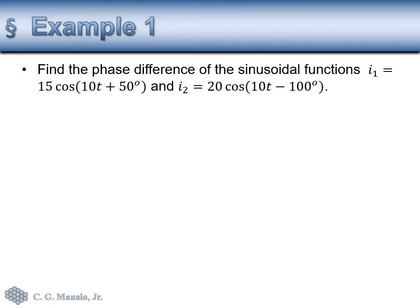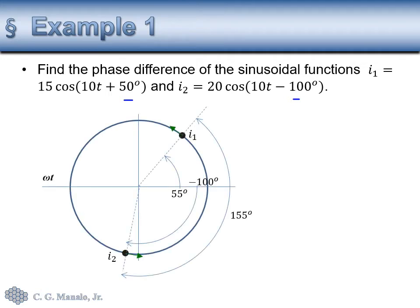Let's take an example. We have two sinusoids, I sub 1 and I sub 2, each expressed as the same cosine function, so we don't need to convert them to sine. They have different phase angles, so they are not in-phase sinusoids. The question is which is leading and which is lagging and by how much. Drawing them on a circle, it is clearly shown that I sub 2 is lagging I sub 1, or I sub 1 is leading I sub 2, by that angle.